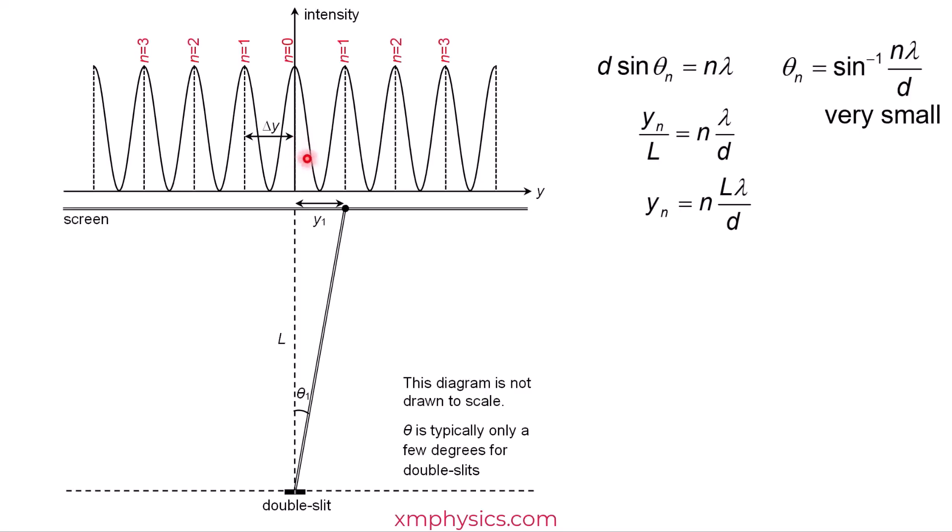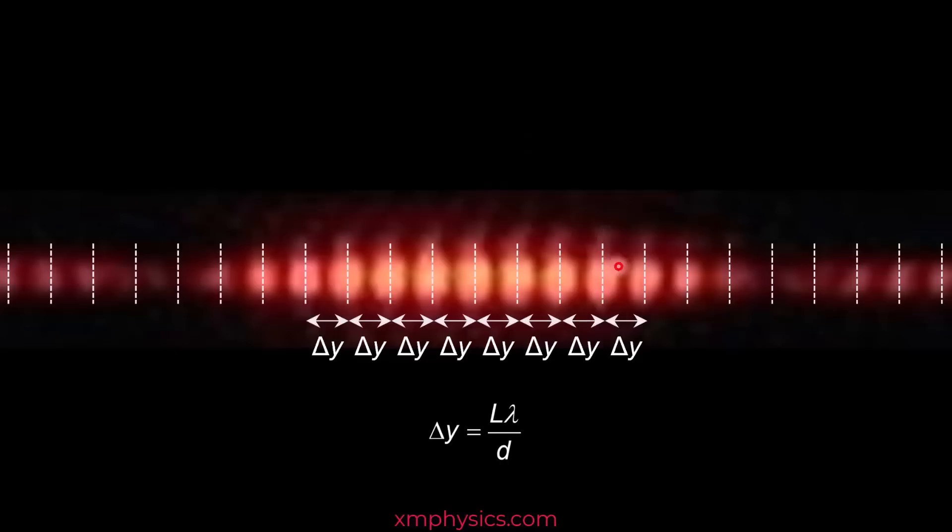So if I want to find the fringe separation, I just need to take the y position of two consecutive bright fringes and do the subtraction. And the answer is, of course, L lambda over d. So because for the double slit, the bright fringes are usually formed at very small diffraction angles, and because of that, the bright fringes are equally spaced out. And because of that, there's such a simple formula for us to calculate the fringe separation.